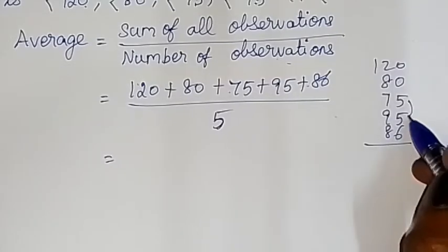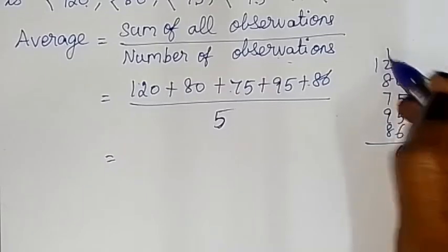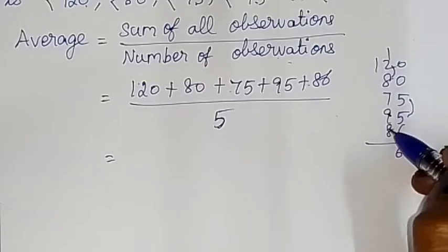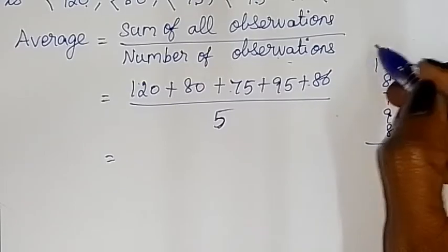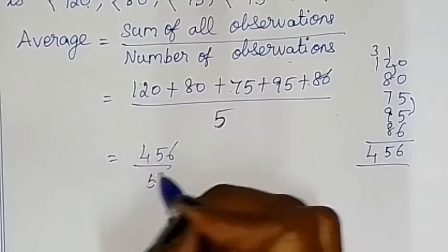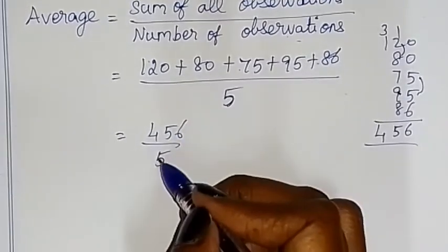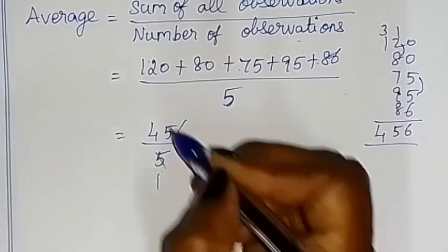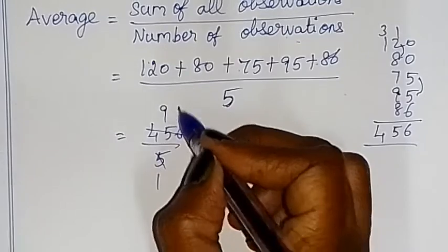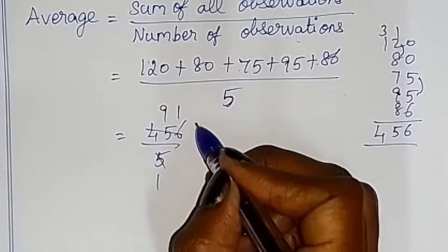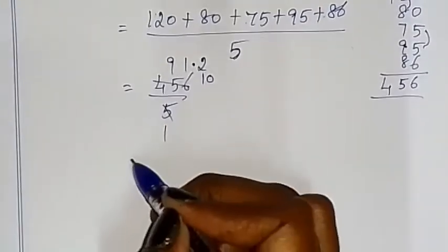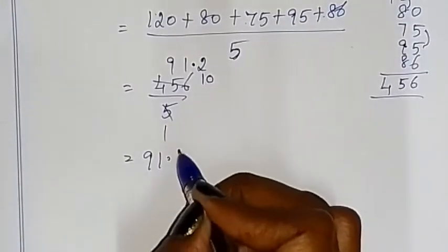Carrying over: 10 to 10, 9 plus 1 carry over gives 10, bringing it to 15, so the tens digit is 3 and we get 35. Then 3, 4, 5, 6 — the total sum is 456 by 5. Now we divide: 5 ones are 5, 5 nines are 45, 5 ones are 5. So the answer is equal to 91.2, and that is the answer.